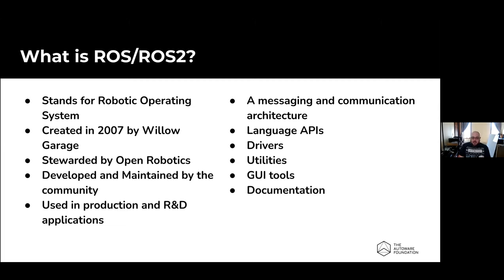ROS is currently used in lots of places in production and R&D applications. There is a whole ROS Industrial group that specifically deals with ROS on industrial robots in industrial settings. Many factories - big names you've probably heard of - use ROS in their robotic systems for automated production lines. Outside of that, it's used for everything from hobby robots all the way up to complex autonomous systems, which is what we're talking about today. In general, ROS is really a messaging and communication architecture.